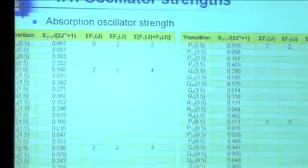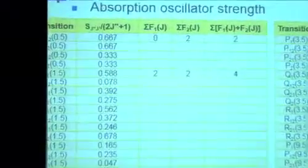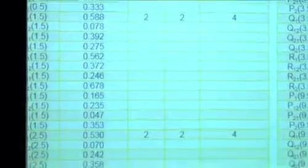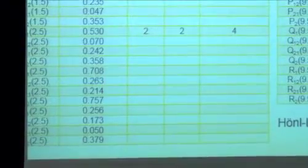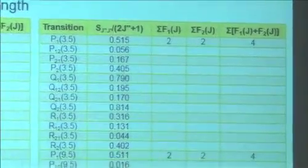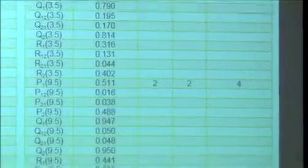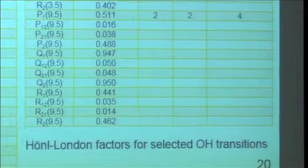The Hönl-London factor already divided by 2J plus 1 is tabulated — all these numbers. If you force yourself to go through this table, you'll understand all these factors of 2 and 4 and see how it adds up. Boltzmann fractions must add to 1. The molecules have to be somewhere and can't be in two places. If you sum over all states and get 2, you've miscounted by a factor of 2.